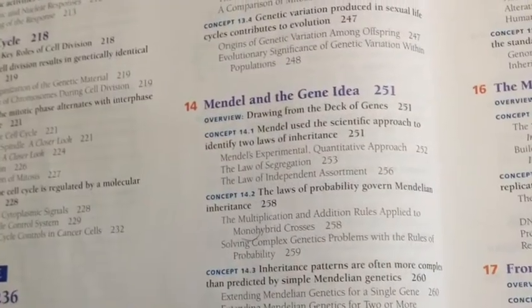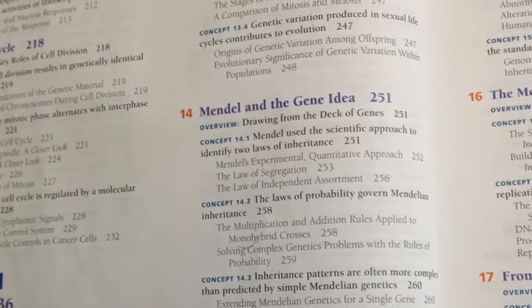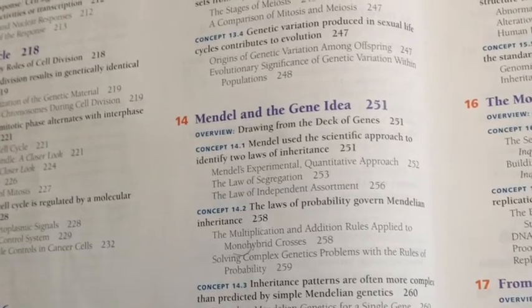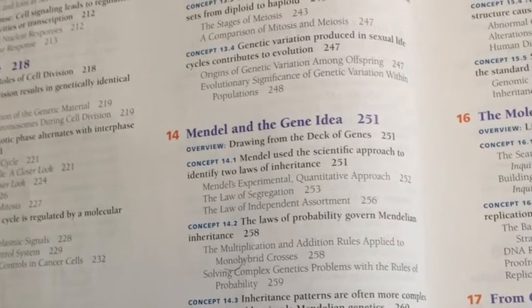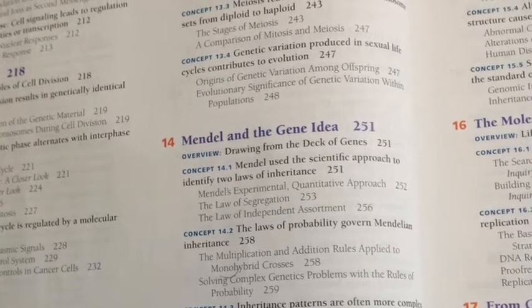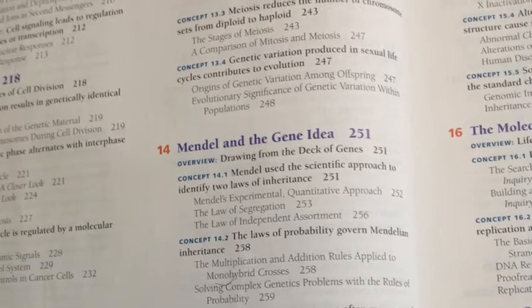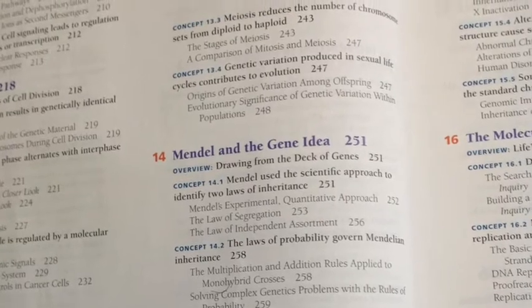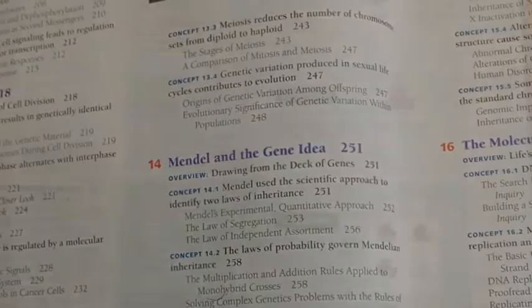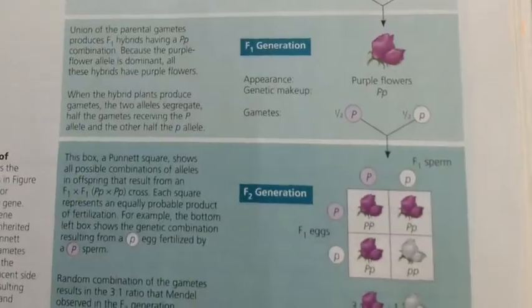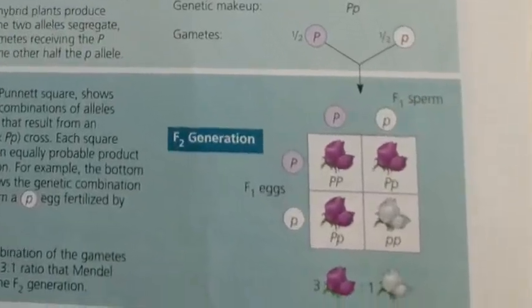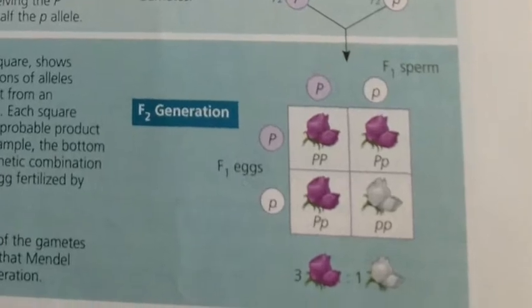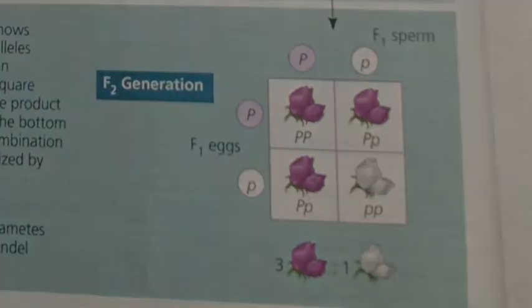The next question wants to know what chapter has Punnett squares. Looking in the table of contents, you'd see chapter 14 has ideas about Punnett squares. And if you went to pages 253 and 256, you'd see Punnett squares.